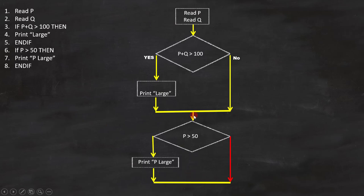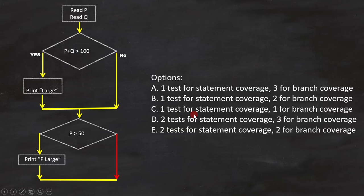With this the flowchart is complete. Now using this flowchart we have to find out how many test cases are needed to cover statement coverage and branch coverage. With this path, we can cover all the statements. That means we need one test case to cover the statement coverage.